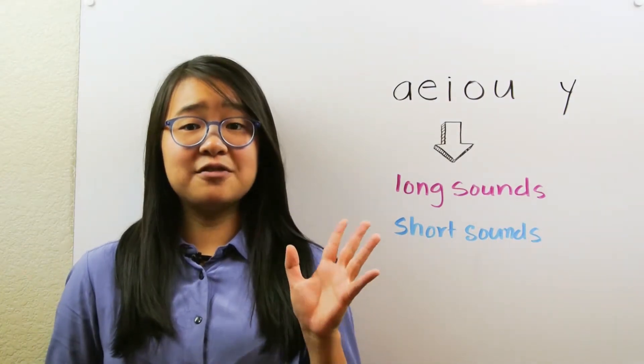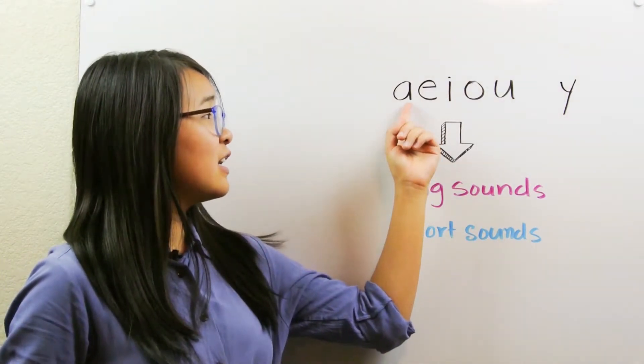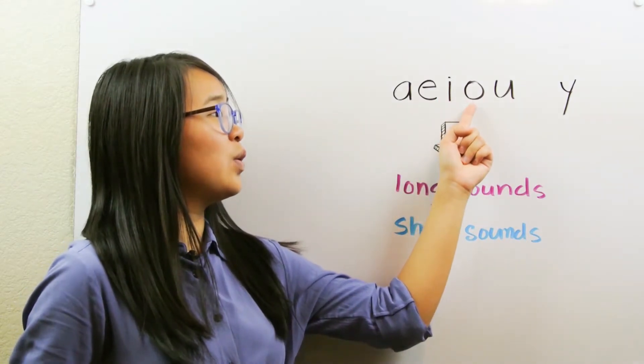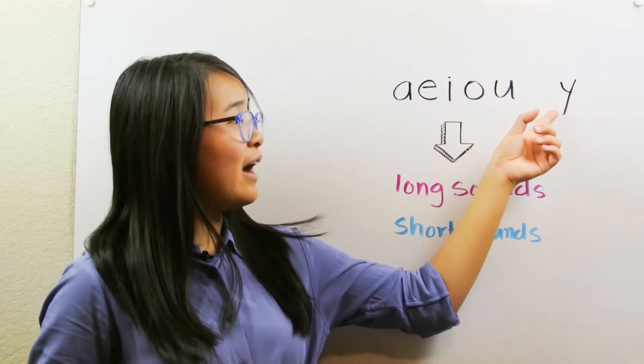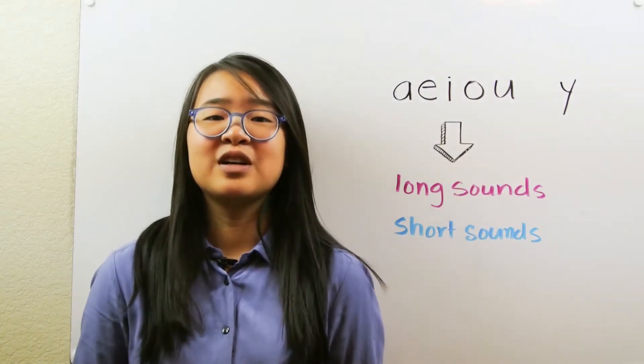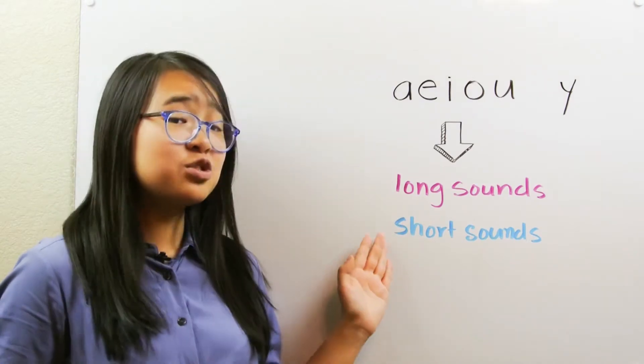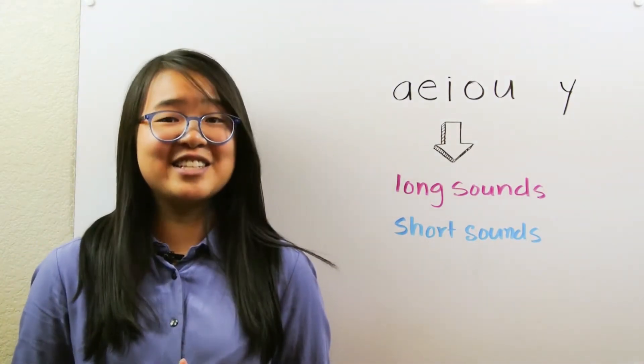There are five vowels and they are A, E, I, O, U. Sometimes Y is a vowel too. Each vowel makes either a long sound or a short sound. Let's look at some examples to understand the difference.